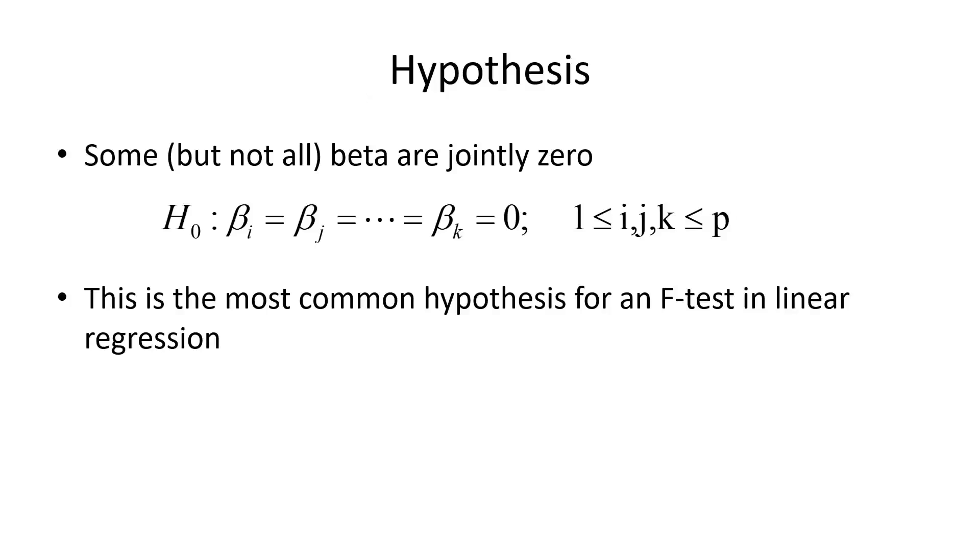We will explore the sums of squares hypothesis a little bit more. Here we have a joint hypothesis where we set all betas simultaneously to zero, but these are not all the betas in the regression as we had in the last example, just a subset of them.